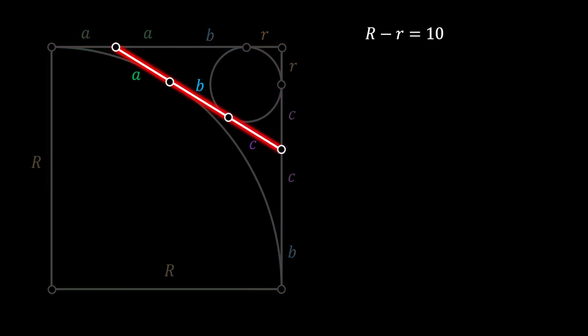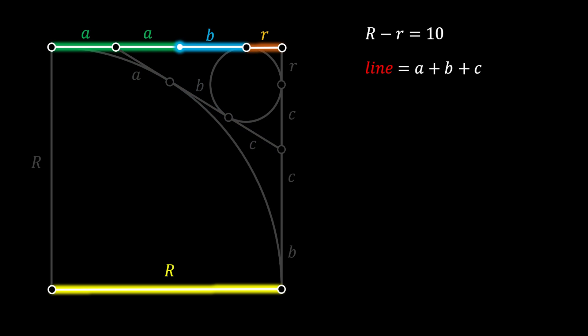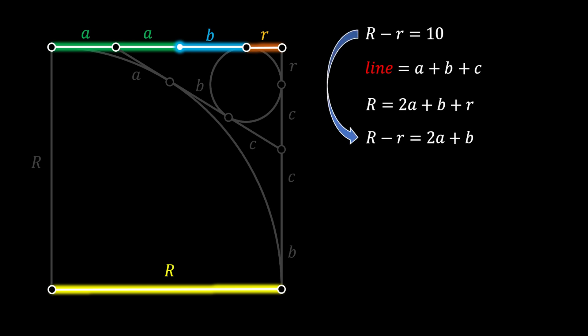Now we have everything needed to form our equations. First, the length of the red line equals A plus B plus C — that is our first equation. Looking at the horizontal sides of the square, capital R equals 2A plus B plus small r. Rewriting this, the difference between the two radii equals 2A plus B, and since that difference is 10, we get 10 equals 2A plus B.